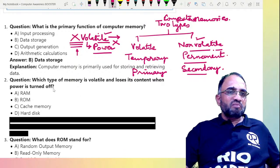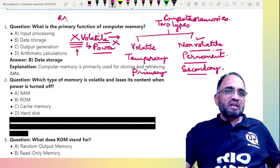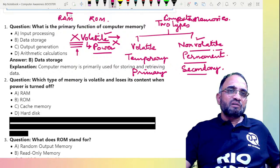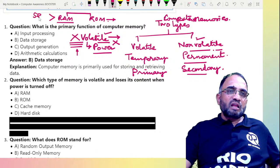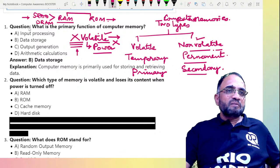Primary memory is classified as RAM as well as ROM. ROM is a permanent memory and RAM is a temporary memory, which is again classified as SRAM and DRAM — dynamic RAM and static RAM. SRAM is built with flip-flops, while DRAM is built with transistors and capacitors.